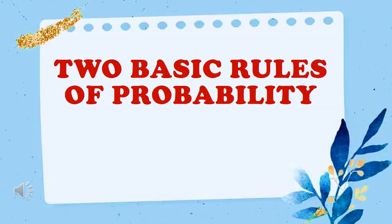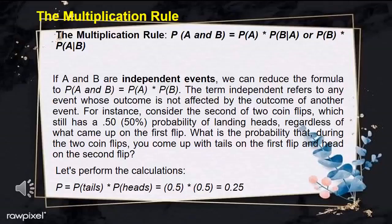Let us discuss the two basic rules of probability: the multiplication rule and addition rule. The multiplication rule states that P of A and B is equal to P of A times P of B given A, or P of B times P of A given B. If A and B are independent events, we can reduce the formula to P of A and B equals P of A times P of B. The term independent refers to any event whose outcome is not affected by the outcome of another event.